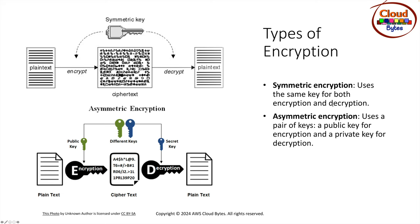In asymmetric encryption, you have a pair of keys — a public key and a private key. The private key is never shared with anyone. You share your public key with anyone who wants to send you a message; they use it to encrypt the plain text into ciphertext. Once the ciphertext reaches you, you apply your private key to perform decryption and read what was sent. So two different keys are involved — a public key and a private key.